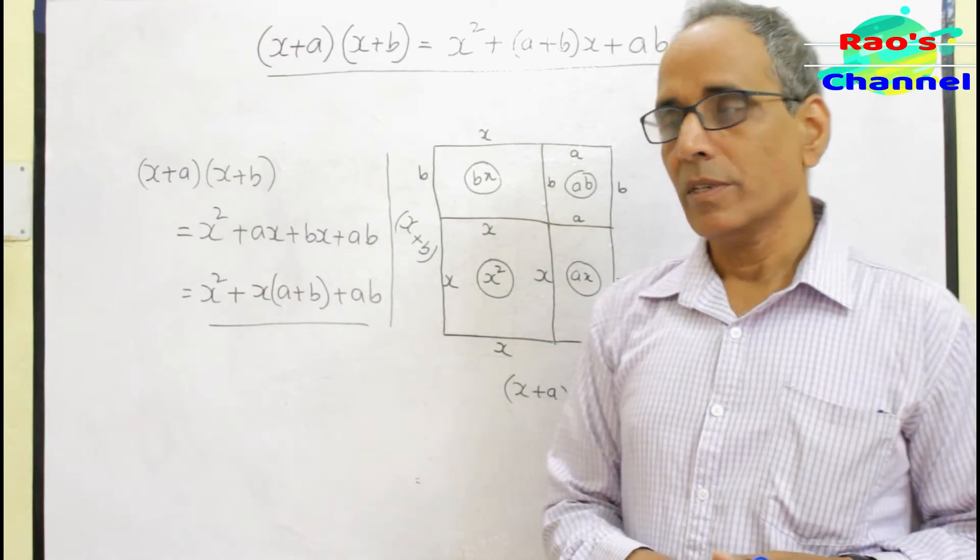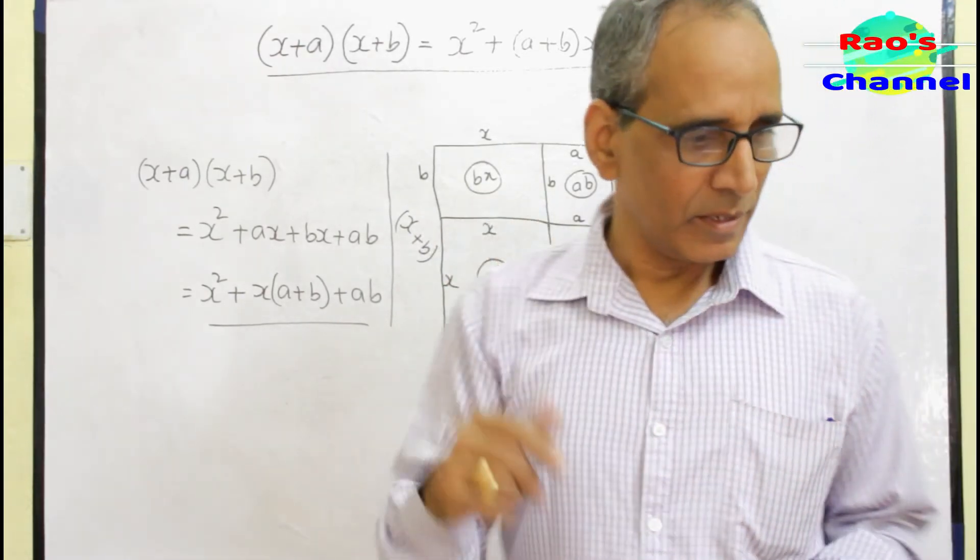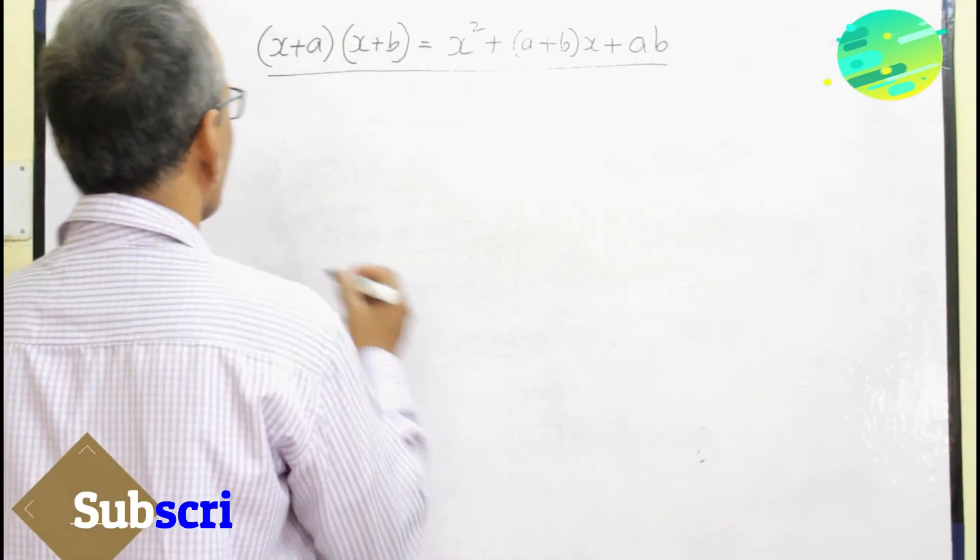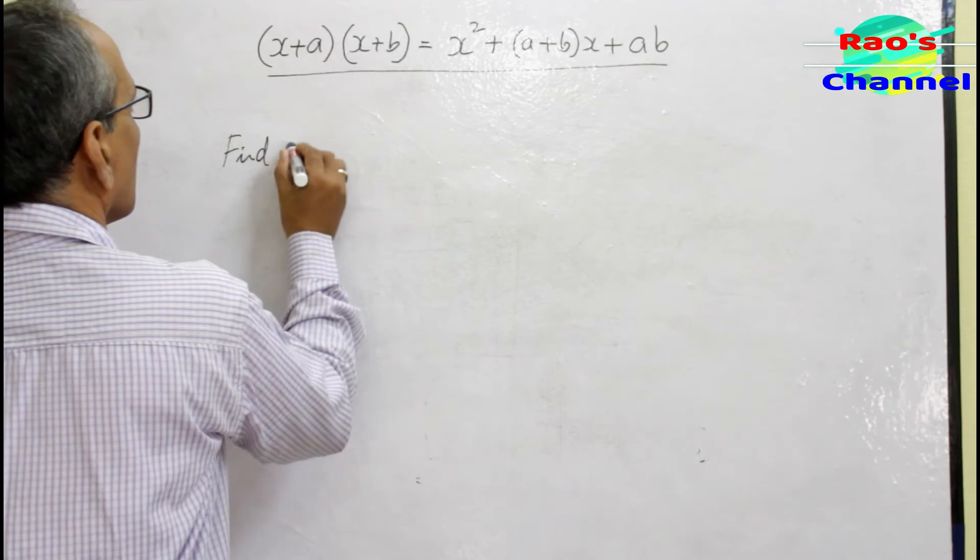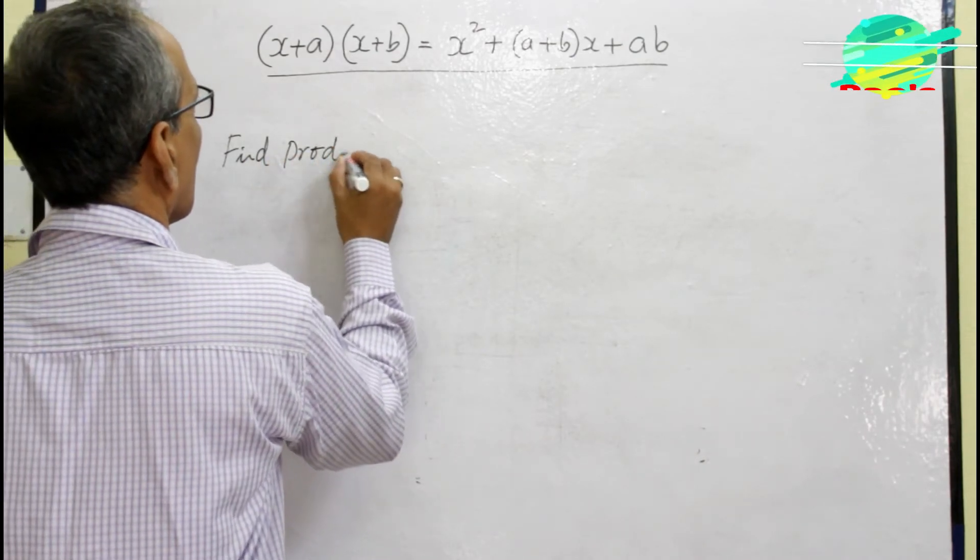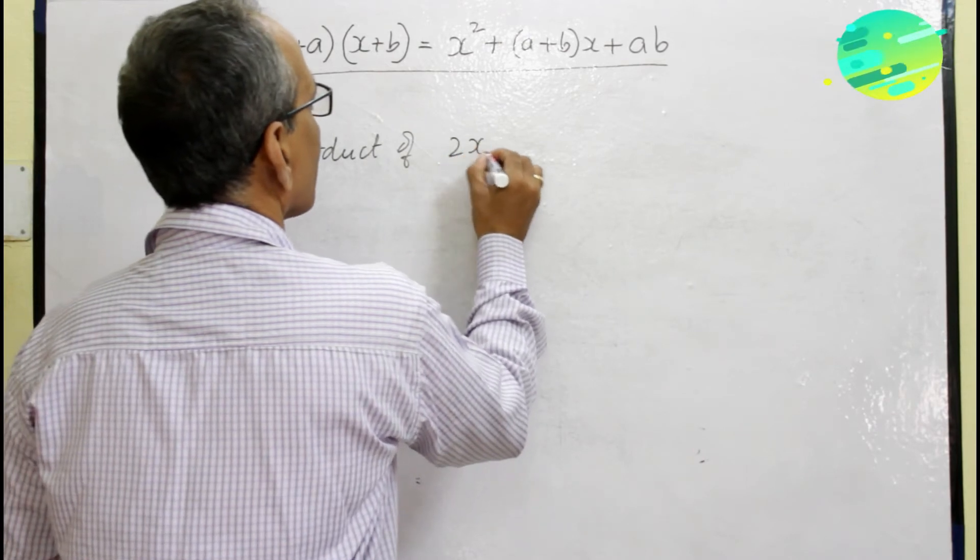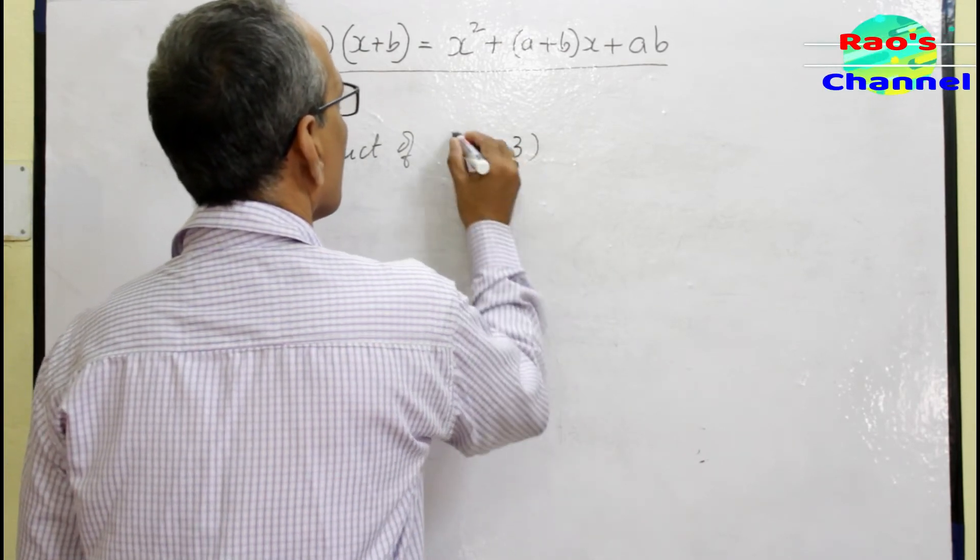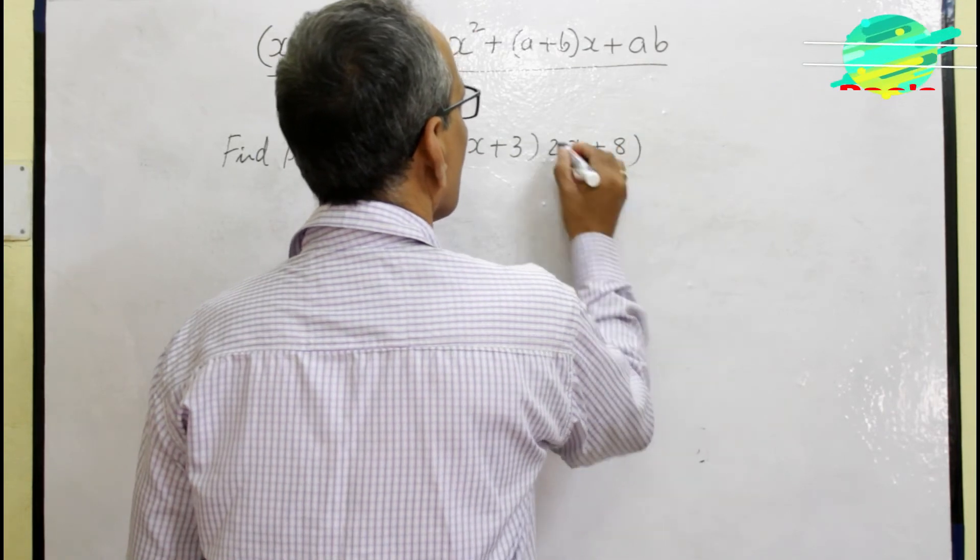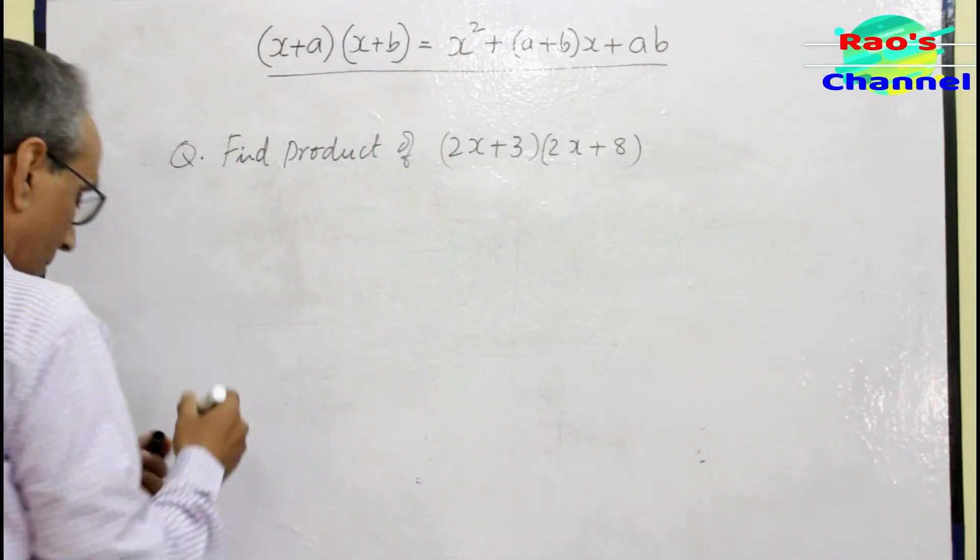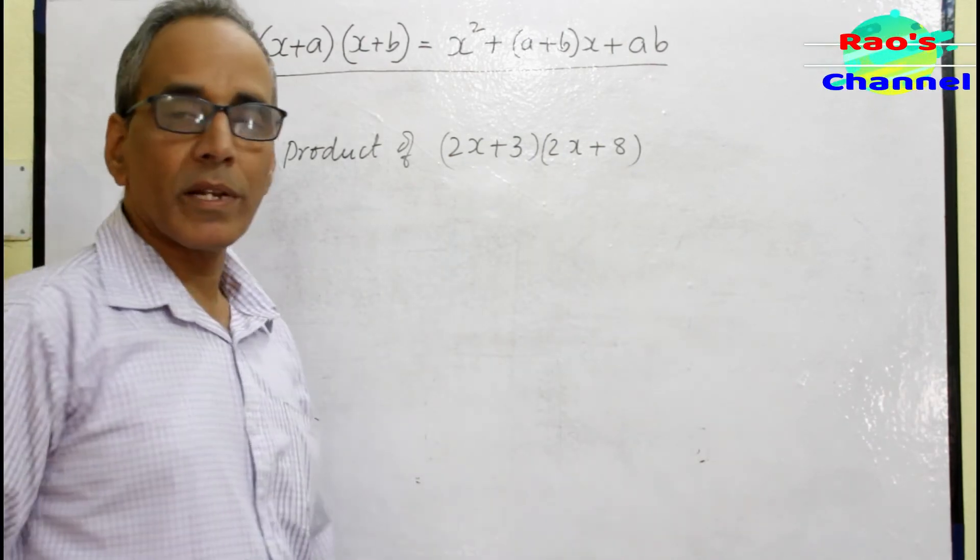Now let's see at least one question today by using the identity. Let's write: Find product of (2x+3)(2x+8).